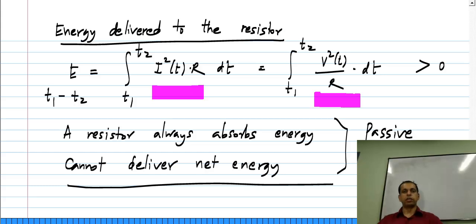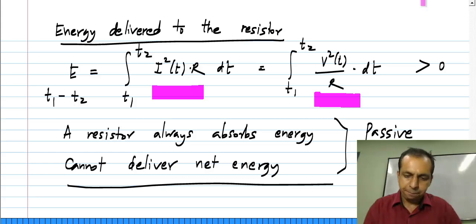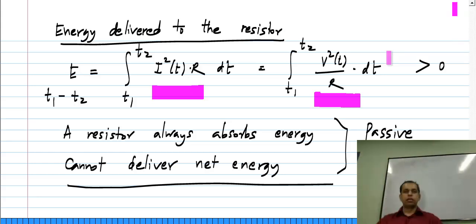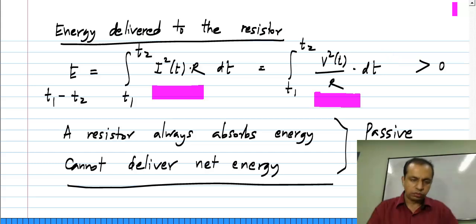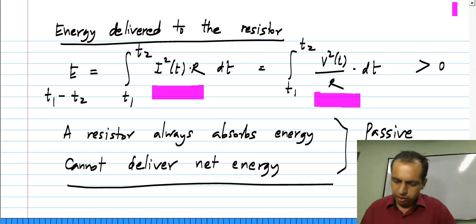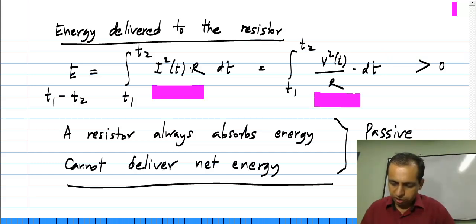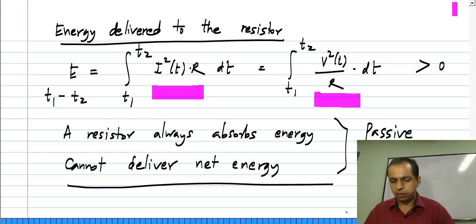Here of course we are considering resistors with a positive value. A physical resistor always has a positive value. So here I have to mention that we consider R greater than 0. Such an element is known as a passive element.